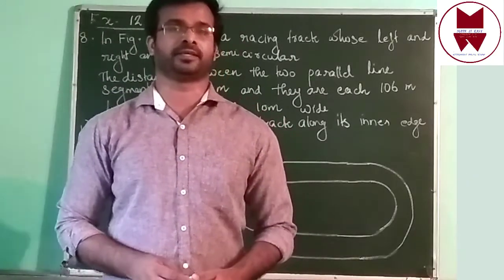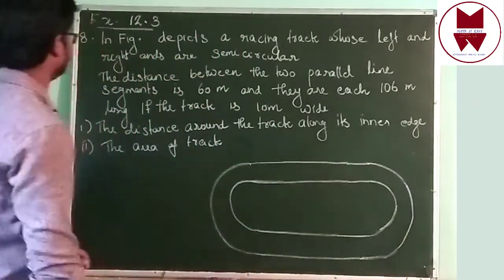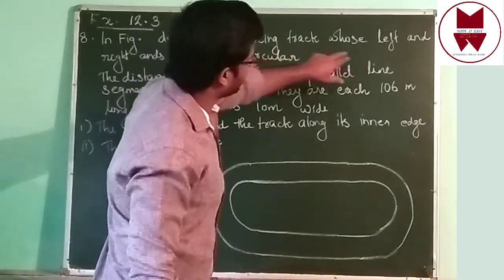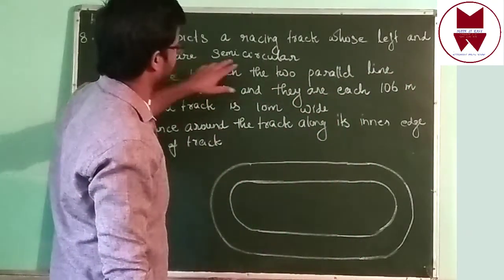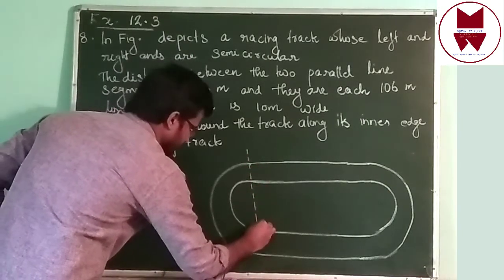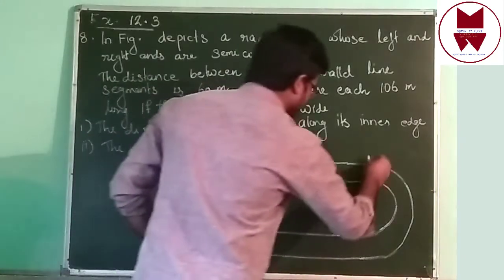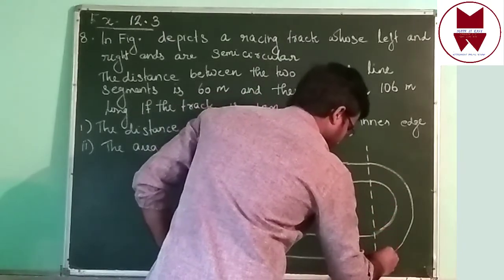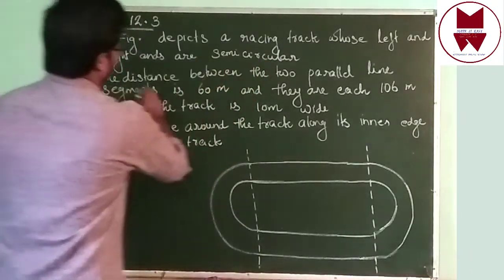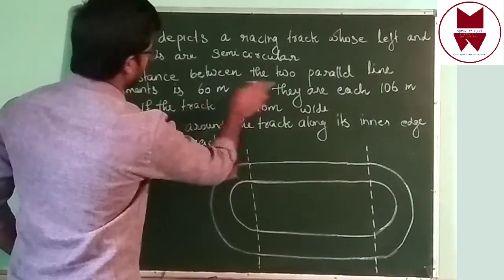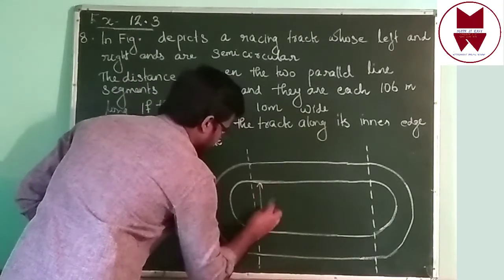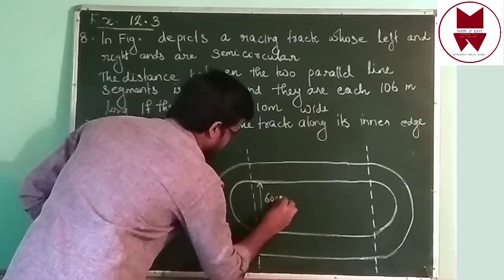Hi students, today we can study exercise 12.3, question number 8. Here one figure is given. In the figure, a racing truck whose left and right ends are semi-circles. The distance between two parallel lines, the line segment, is 60 meters.